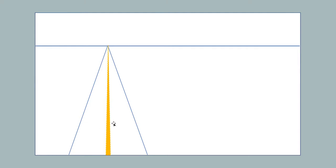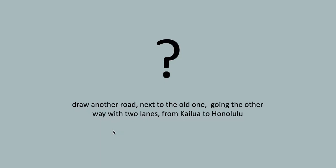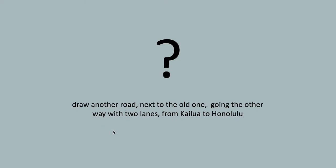Here's an example: a road going back to the horizon — let's say from Kailua to Honolulu on the old Pali road. It's a two-lane road. The state decided to expand it by building another road next to it going the other direction. What I'd like you to do is stop the video, take a piece of paper, and draw a parallel road next to the existing one with two lanes going the other way from Kailua to Honolulu.